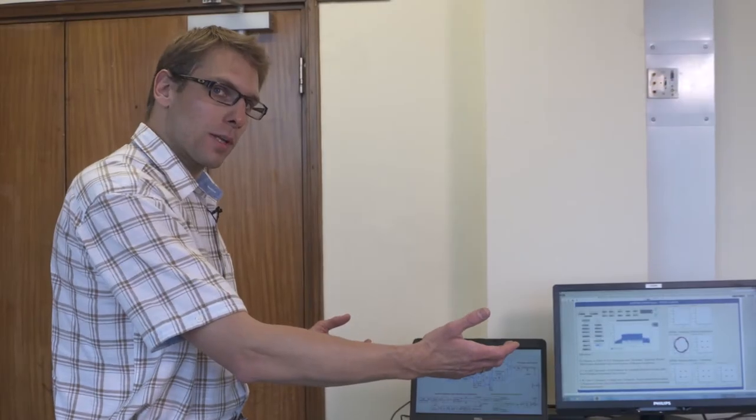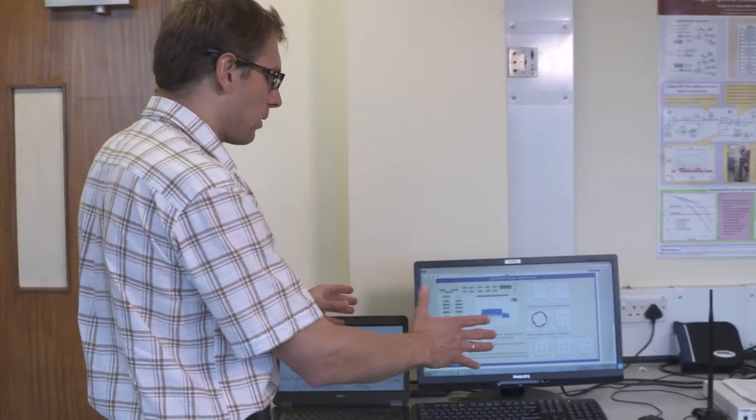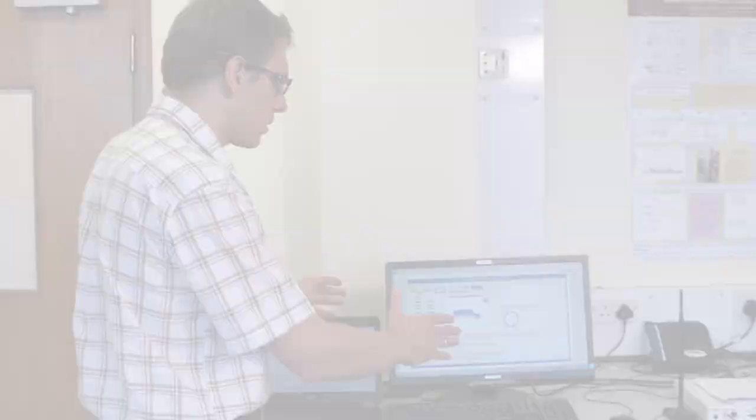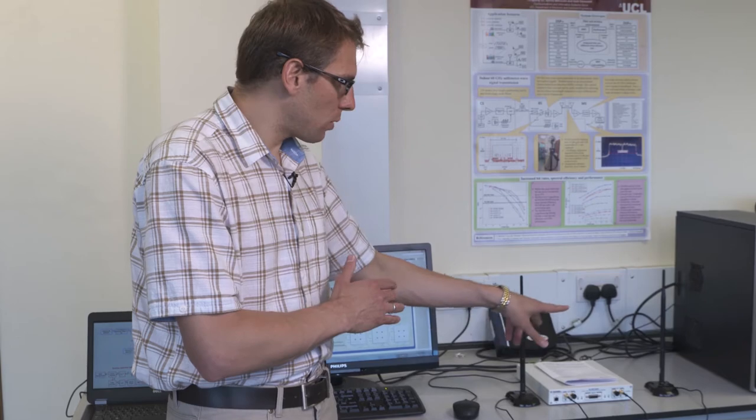So here we have the testbed setup. On the left you can see the system diagram. In the middle we have the computer setup that runs LabVIEW Communication Design Suite, and on the right hand side we have the USRP 2953R with 120 MHz bandwidth along with two antennas.